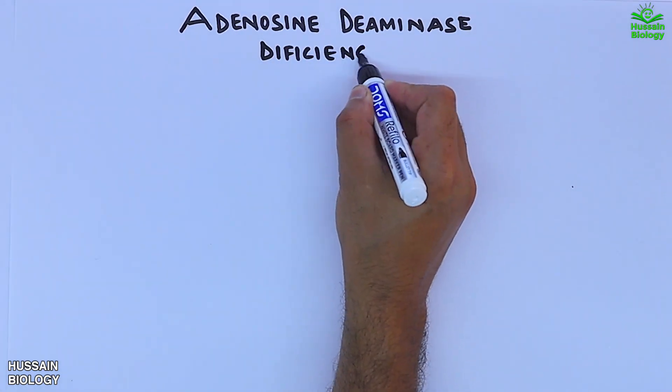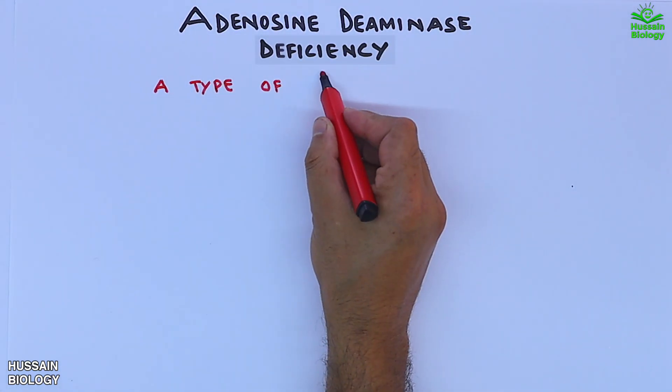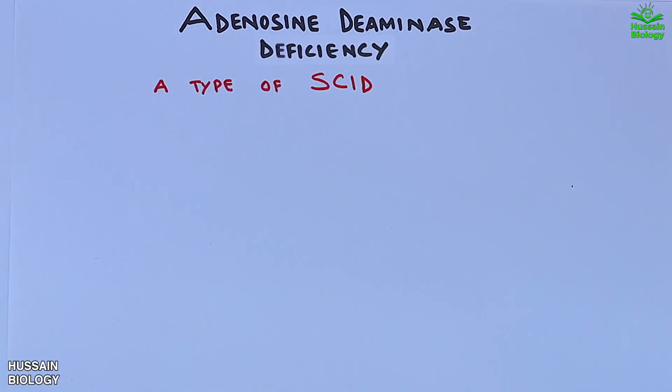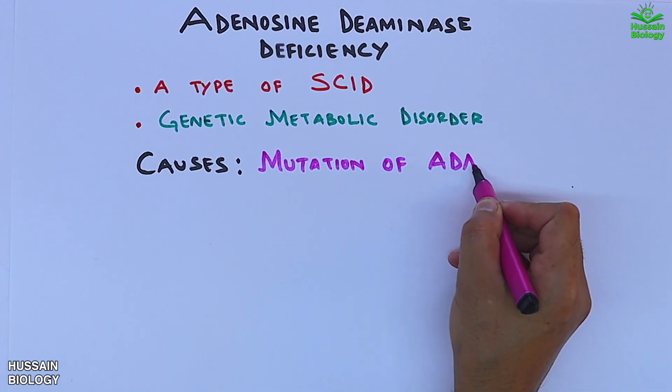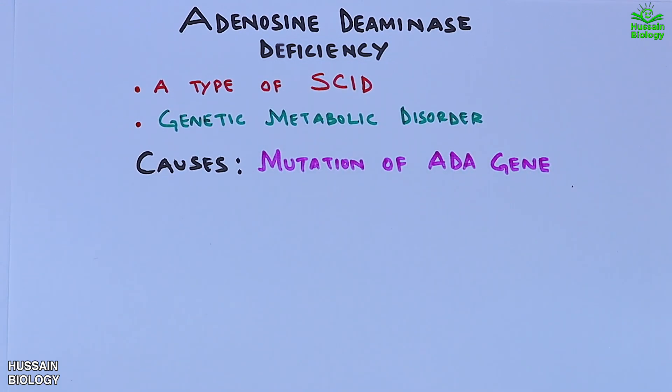In this video we'll be discussing adenosine deaminase deficiency, which is a type of SCID (severe combined immunodeficiency). It is a genetic metabolic disorder which is caused by a mutation of the ADA gene present on the 20th chromosome.